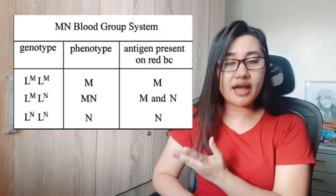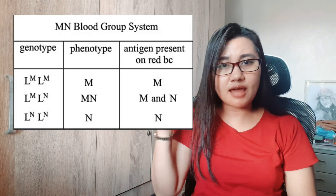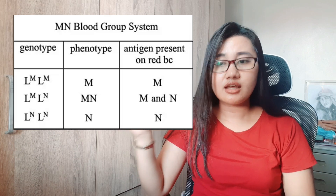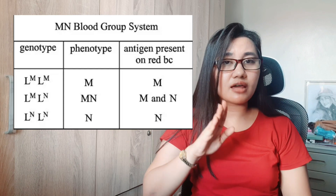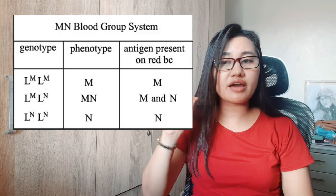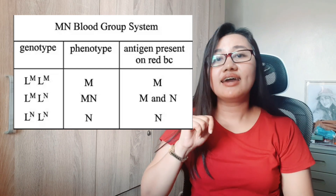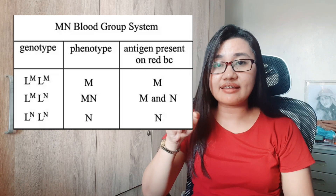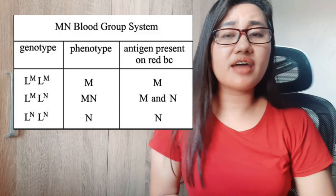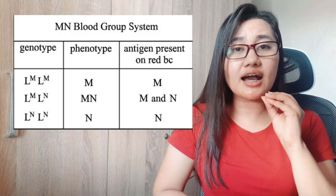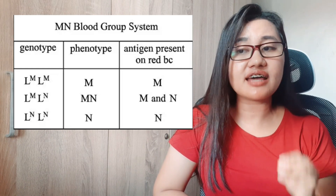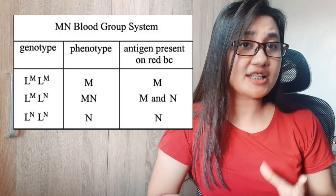Here is the table showing human MN blood types and their genotypes. For blood type M, the genotype is LM LM. For blood type MN, the genotype is LM LN. For blood type N, the genotype is LN LN. Take note that in the heterozygous condition, both LM and LN alleles are expressed — the red blood cells will have both antigens M and N.